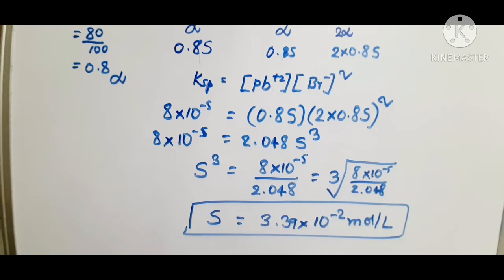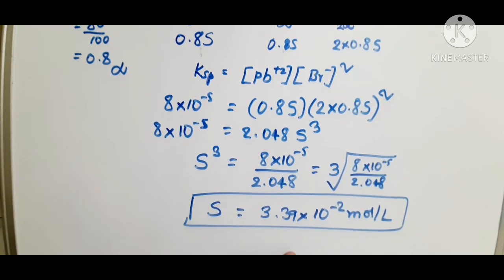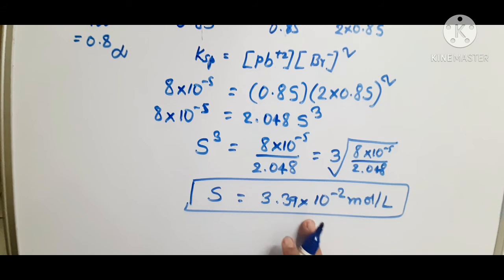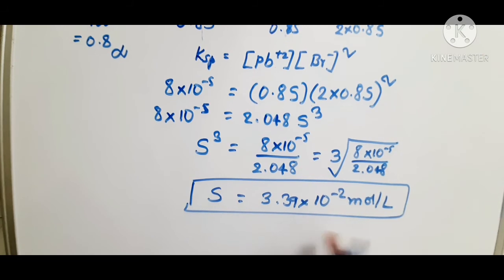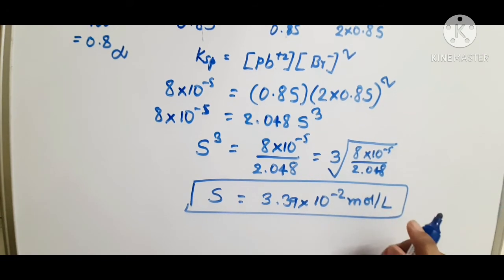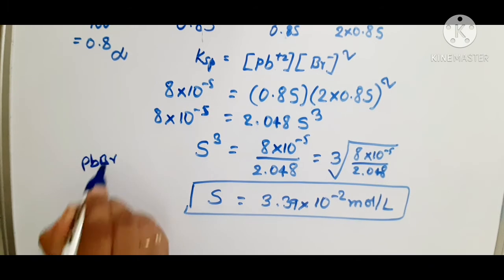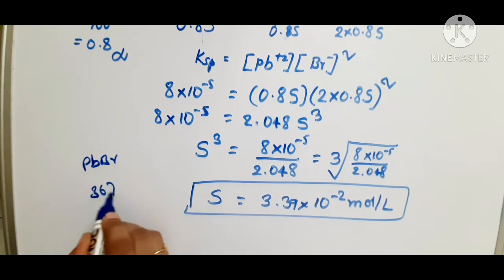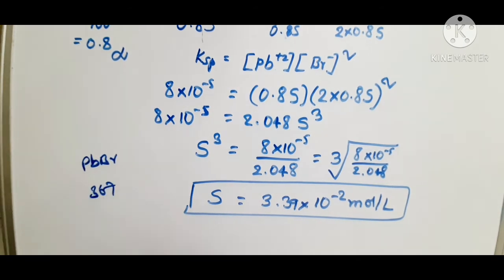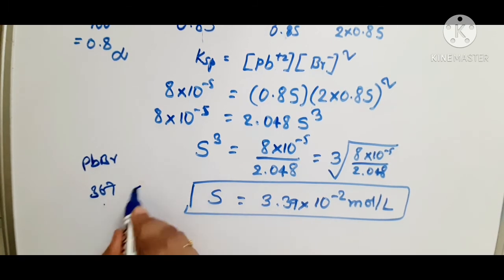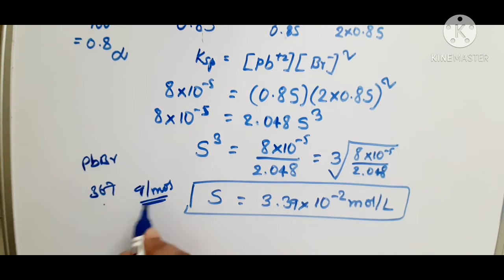If you want to convert this answer into grams per liter, multiply by the molecular mass of PbBr₂, which is approximately 367 g/mol, as was done in the previous example.